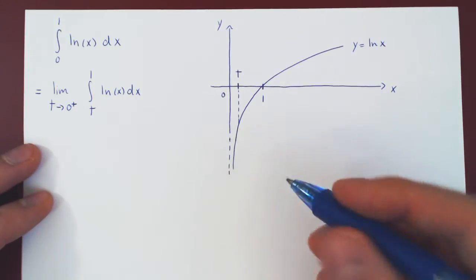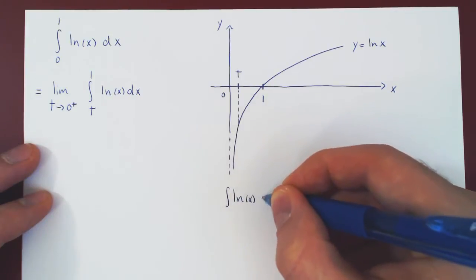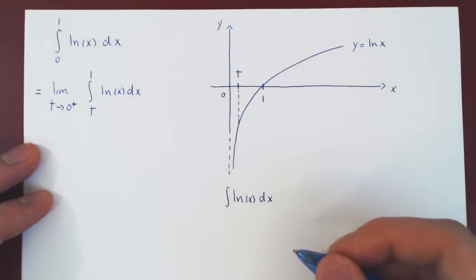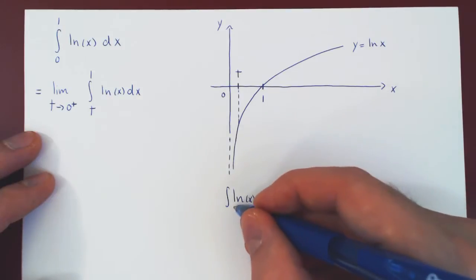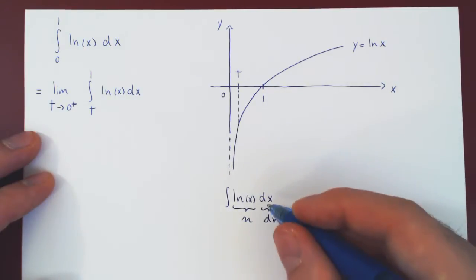Let's evaluate, or let's find the antiderivative of ln of x here. If you recall, this is a classic problem of integration by parts, of course, where we let u be ln of x, dv be what's left over dx.